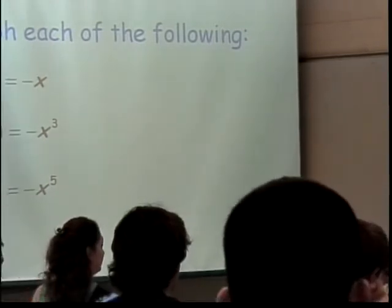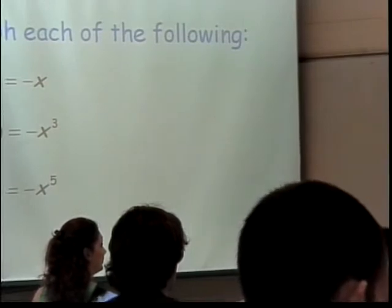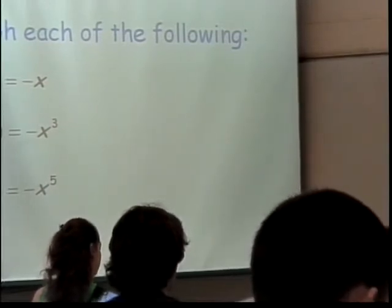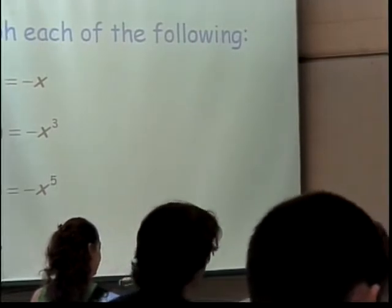So what happens to this graph when the leading coefficient becomes negative? It reflects over the x axis. It reflects over the x axis, which makes it look like this. That's what I said. That's exactly what I did.